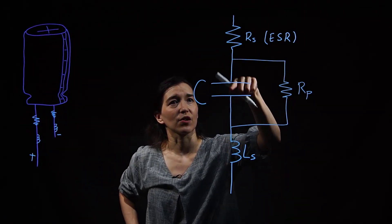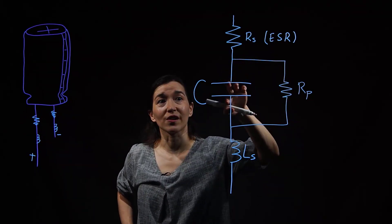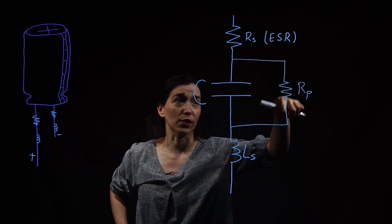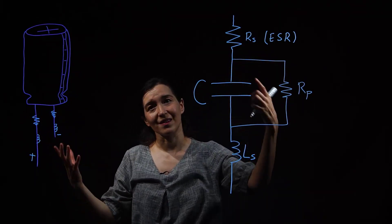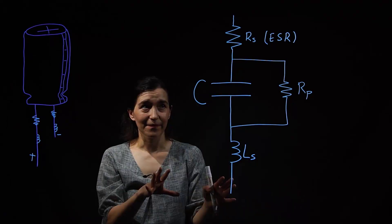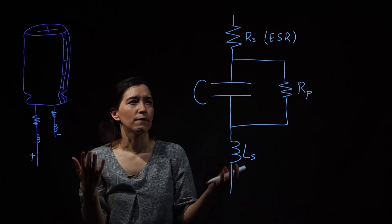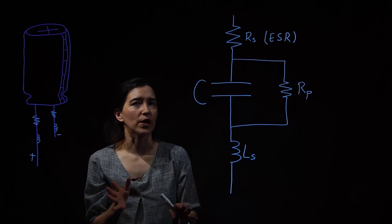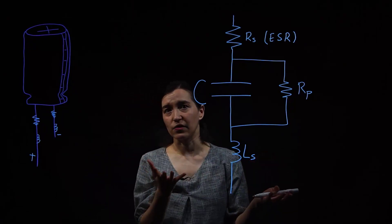But in reality, the current can still flow. So the charge that was on these plates can still flow through this parallel resistance and will discharge. So this would be the full parasitic model that we would use in a power electronics sense.